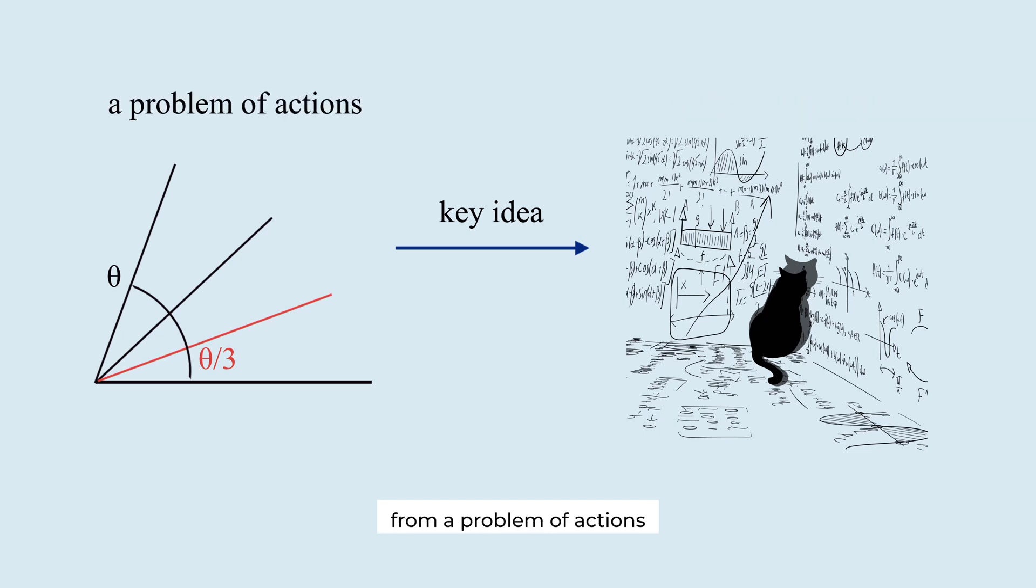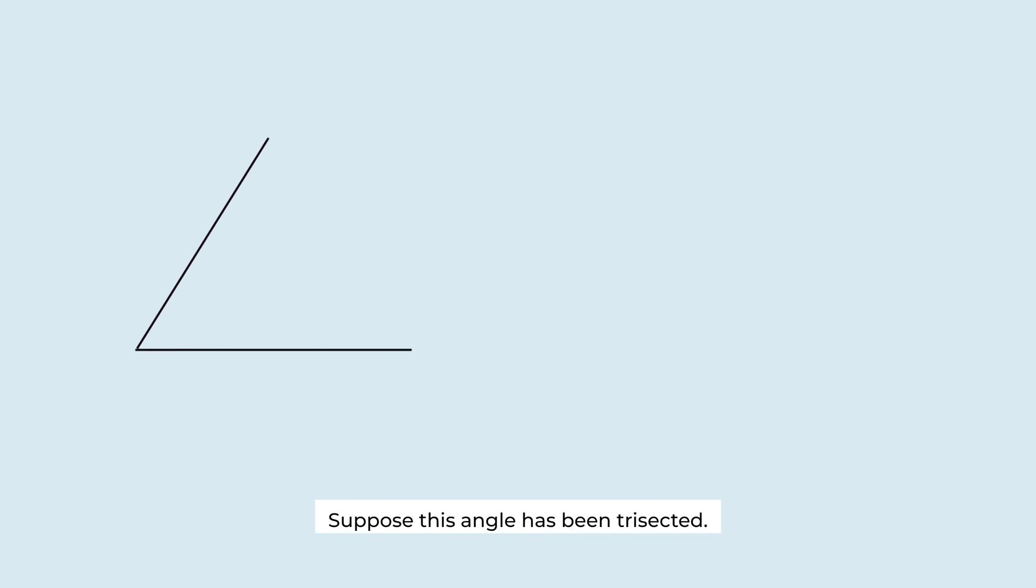From a problem of actions to a problem of theory, there's an arbitrary angle. Suppose this angle has been trisected. Let's call this angle theta. The original angle becomes 3 theta.